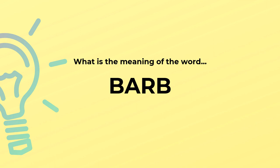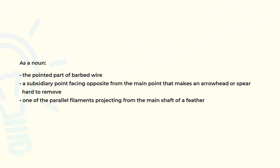What is the meaning of the word barb? As a noun: the pointed part of barbed wire; a subsidiary point facing opposite from the main point that makes an arrowhead or spear hard to remove; or one of the parallel filaments projecting from the main shaft of a feather.